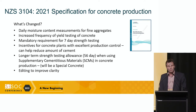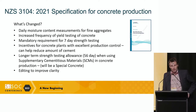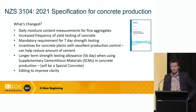There is now a mandatory requirement for seven-day strength testing. This was largely being done anyway by most of the major producers, but it's now mandatory — all concrete producers making concrete in accordance with 3104 must perform this. This helps with early identification of any issues on a more consistent basis. There are also incentives for concrete plants with excellent production control — for those that consistently achieve above target strength, this can help them reduce the amount of cement, which has benefits for sustainability and cost.